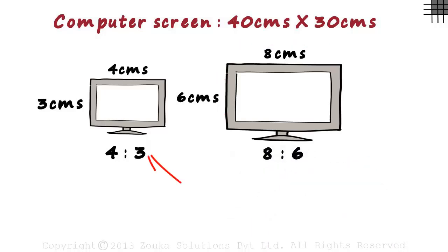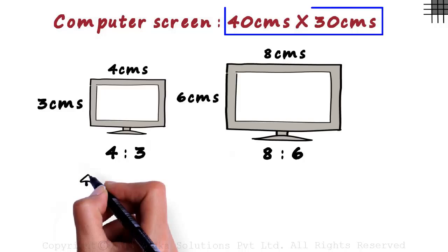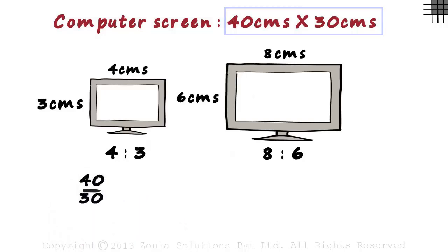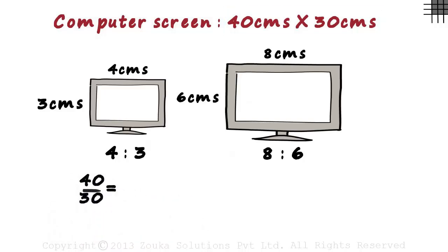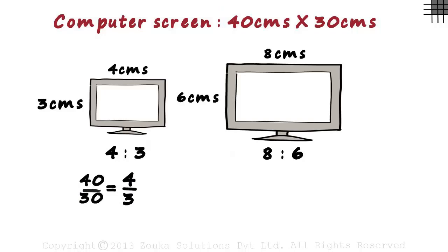Let's talk about the first case. Why 4 is to 3? The ratio of the length to the breadth of the actual computer screen is 40 by 30. When reduced it can be written as 4 by 3. Basically if we divide both the numerator and the denominator by 10, we get 4 by 3.